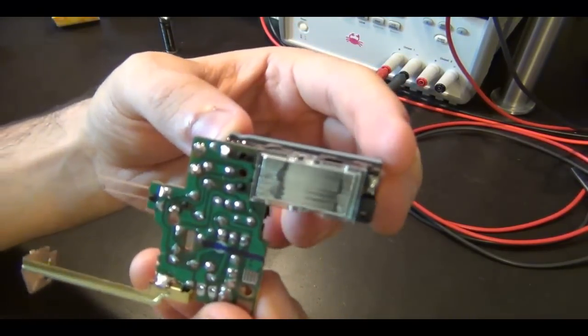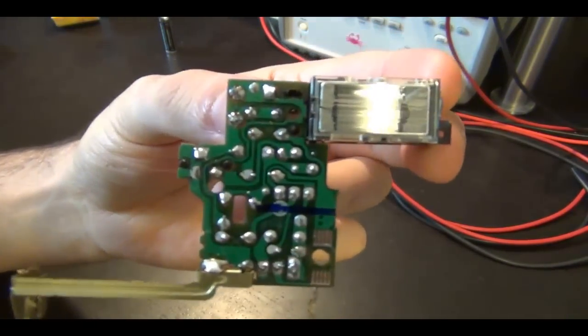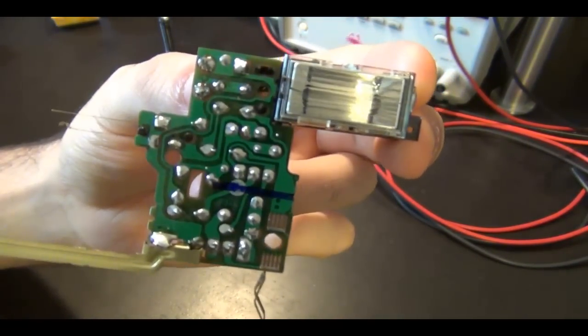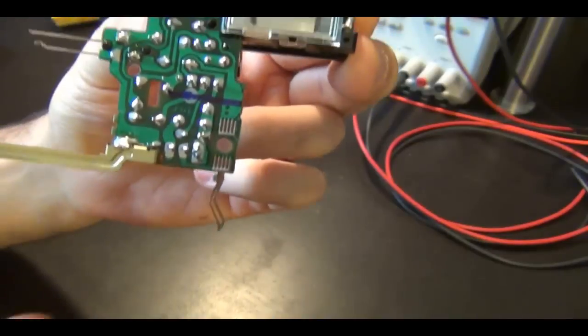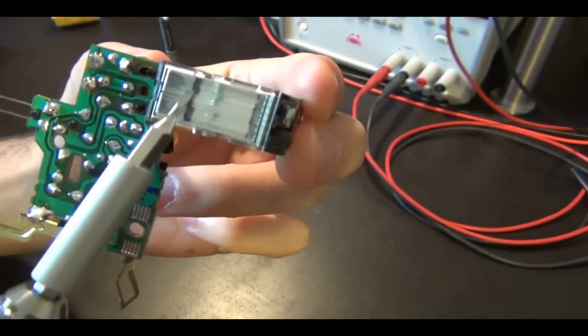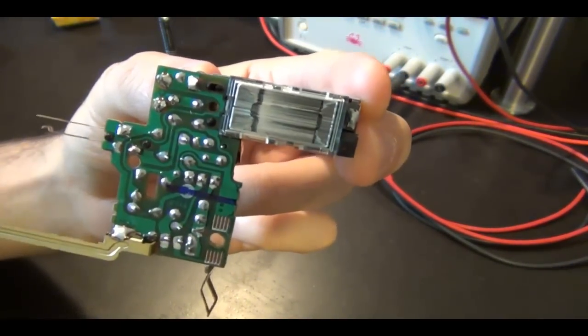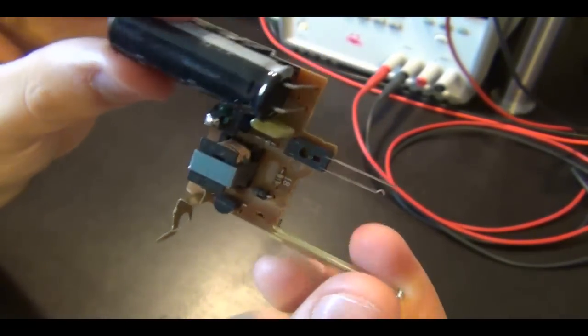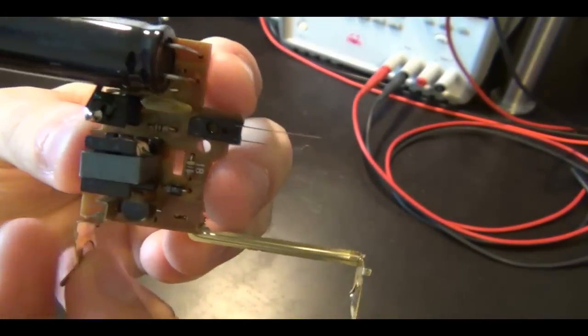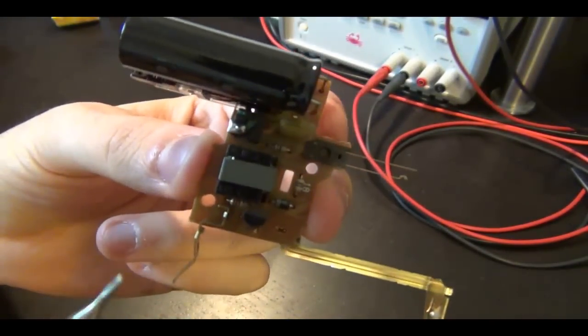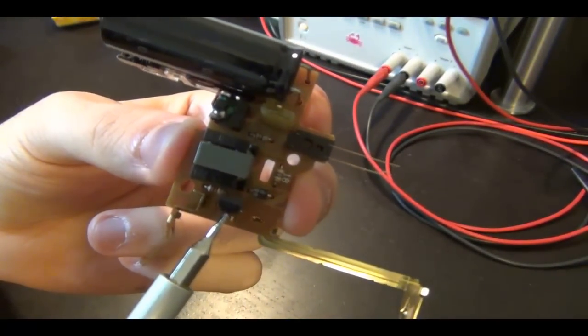And let's take a close look at this and see what components are involved in making one of these and then we will analyze the circuit. So of course from the back you can see the flash tube and you can see the two terminals of the battery and the little terminal here that does the firing of the flash itself.